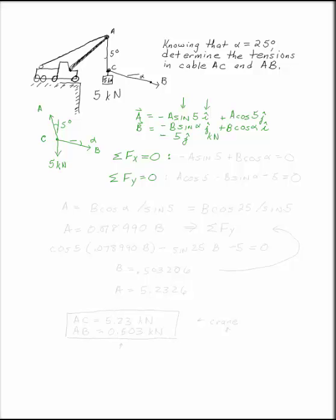To sum the forces in the x direction, add up the i's. We have minus A sine 5, plus B cosine alpha, equals zero.